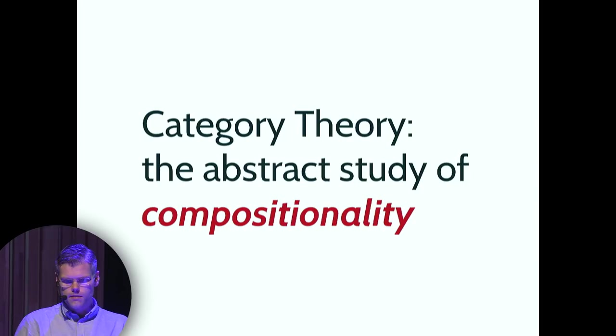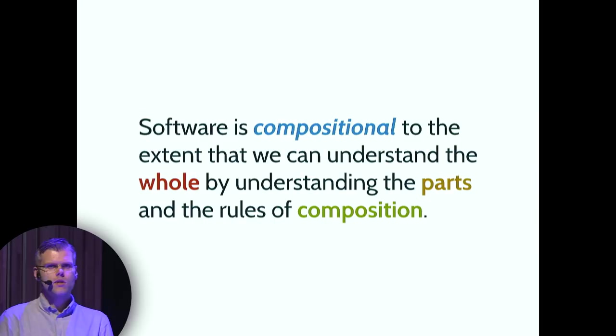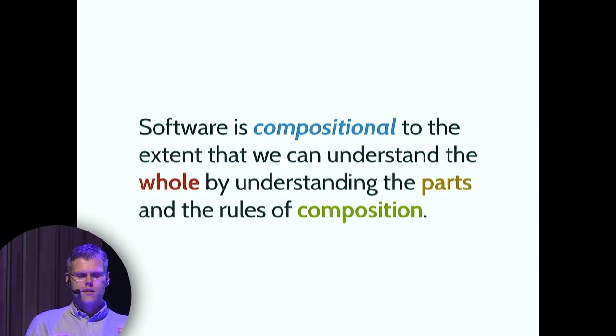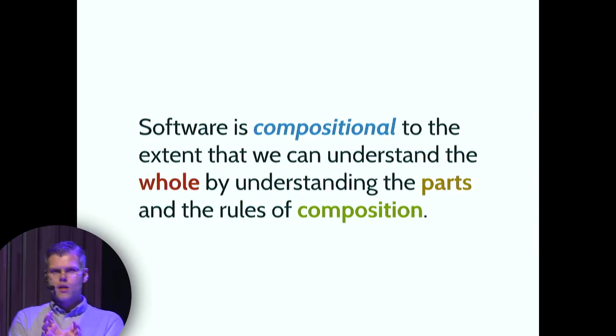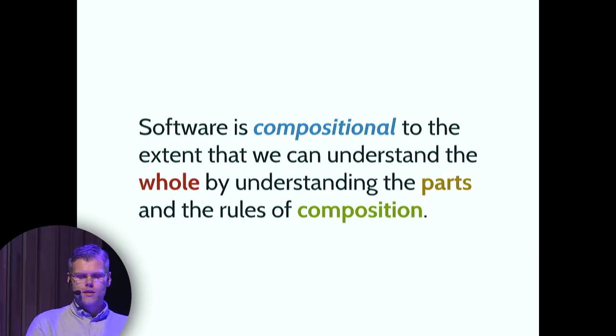So what is compositionality? The definition I like is this one: software is compositional to the extent that we can understand the whole system by understanding the parts and understanding the rules of composition. The idea is that we construct software from modular pieces that we can individually understand, that are meaningful on their own. And then if we understand those pieces and how they are put together, we understand the whole system. There's nothing outside of understanding the pieces and the composition that will inform our understanding.